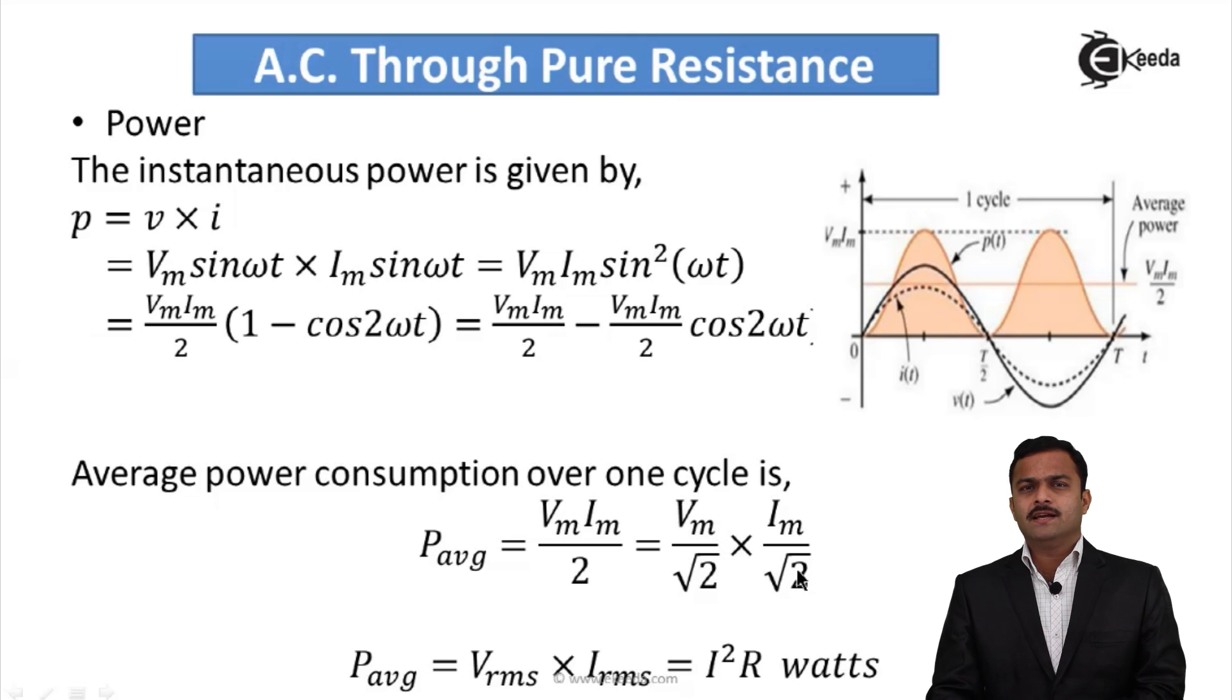One √2 will go for this Vm, another √2 for this Im. We know Vm/√2 is Vrms and Im/√2 is Irms. So actually average power for this circuit is Vrms × Irms, or in other words you can simply say it's I²R, where I is nothing but the RMS value of current passing through the circuit.